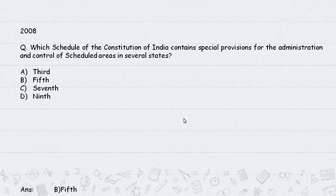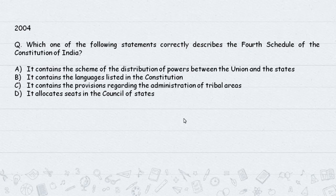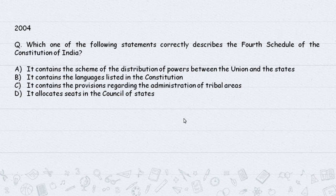Question: Which one of the following statements correctly describes the Fourth Schedule of the Constitution of India? Option: It contains the scheme for distribution of powers between the Union and States. That would be the Seventh Schedule - Union List, State List, Concurrent List. The Fourth Schedule is not about power distribution - it allocates seats in the Council of States (Rajya Sabha).